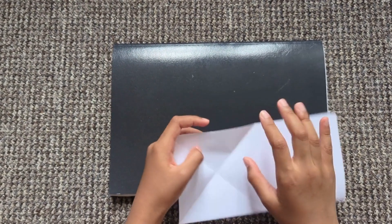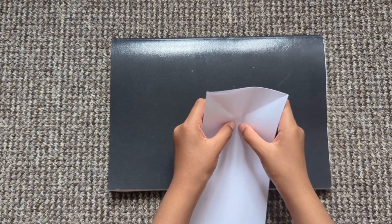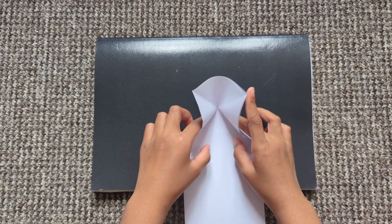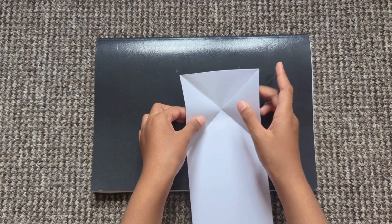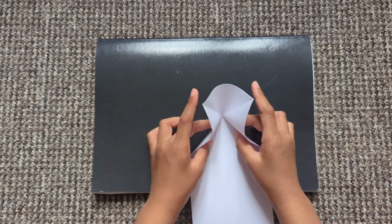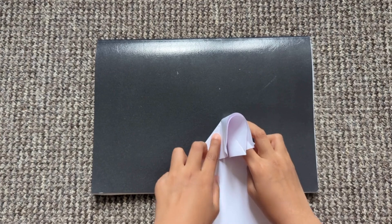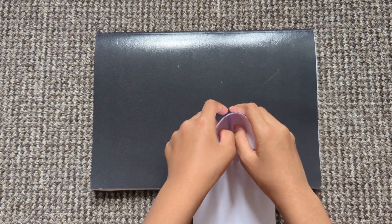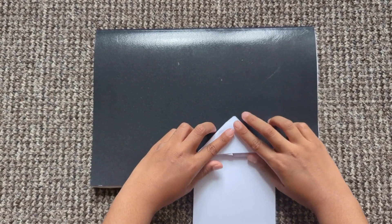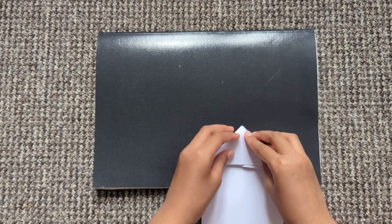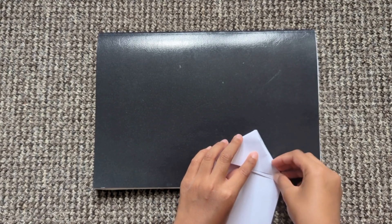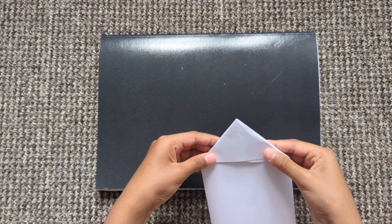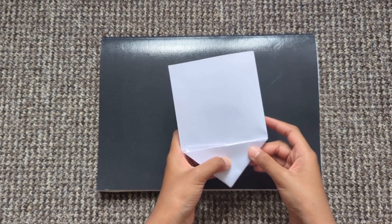And then this step is kind of hard, so basically you squash fold. You hold these two triangles and then you squash it like this. Make sure it's very creased, like extremely folded. And then you just open this and squash this down or push it to the middle. Now do the same on the other side.